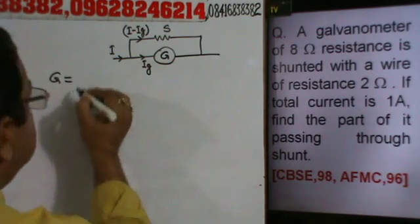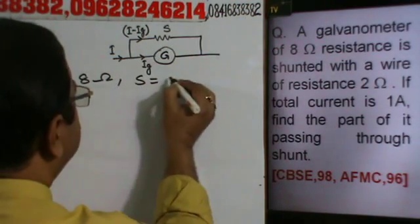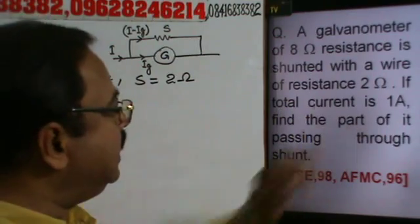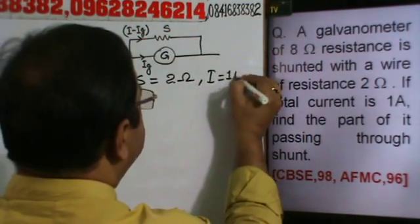It is 8 ohm and it is shunted with a resistance of 2 ohm. If the total current is 1 ampere, I equals 1 ampere.